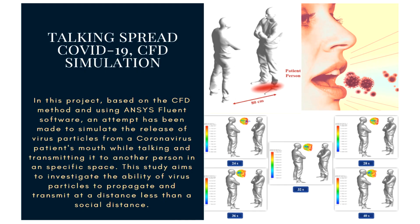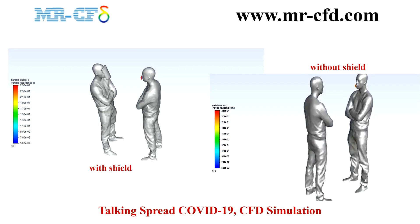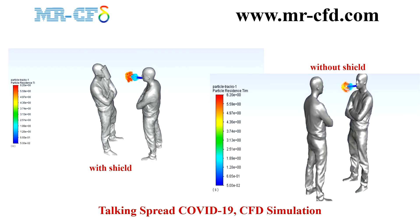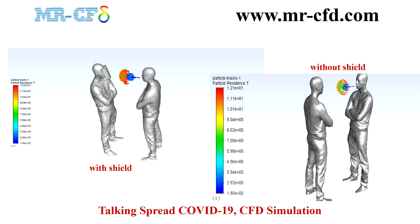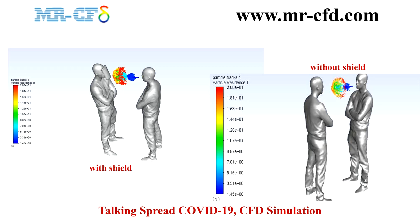Project nine aims to investigate the ability of coronavirus particles to propagate at a distance less than the social distance via talking. One of the doctors' essential recommendations for preventing transmission is maintaining social distance between people when talking. Based on the CFD method using ANSYS Fluent software, an attempt has been made to simulate the release of virus particles from a coronavirus patient's mouth while talking and transmitting them to another person in a specific space.